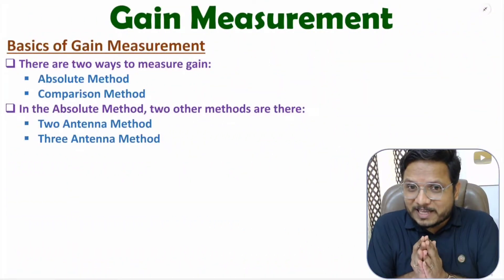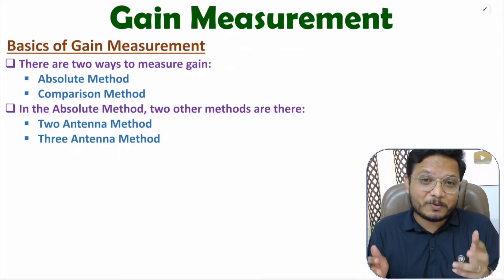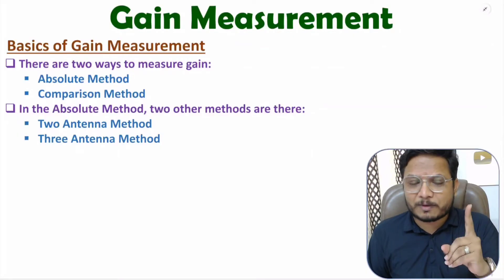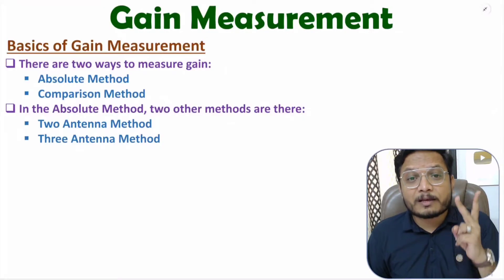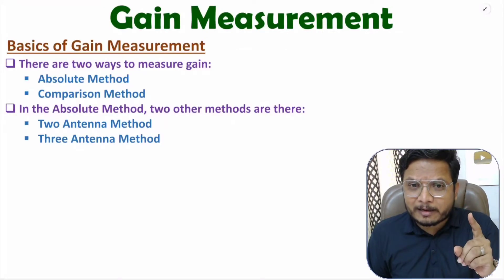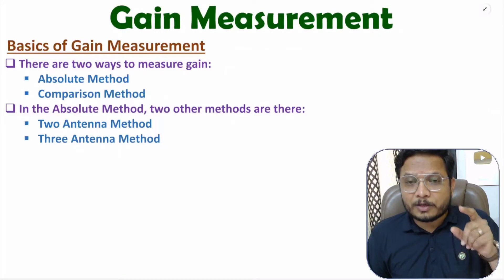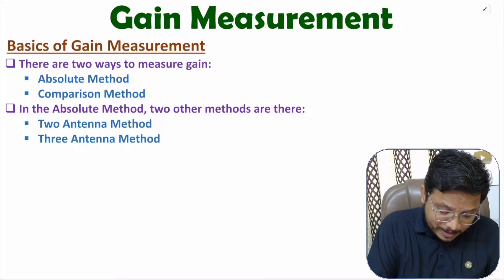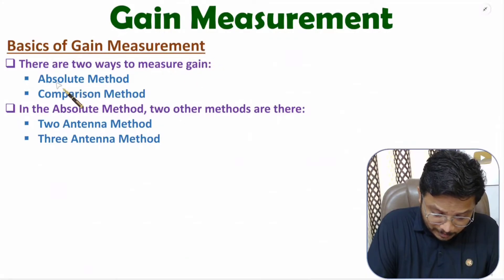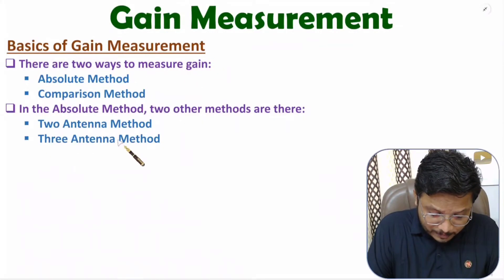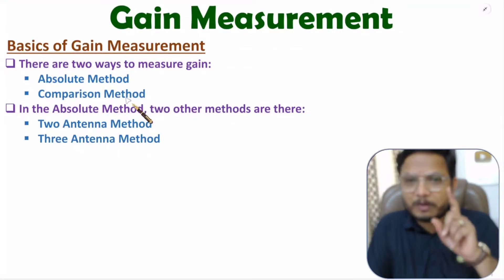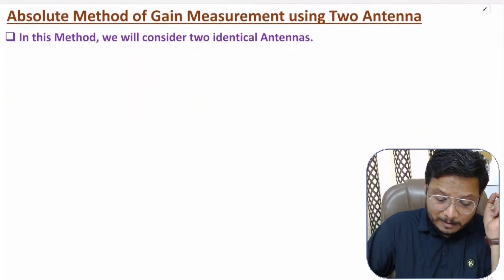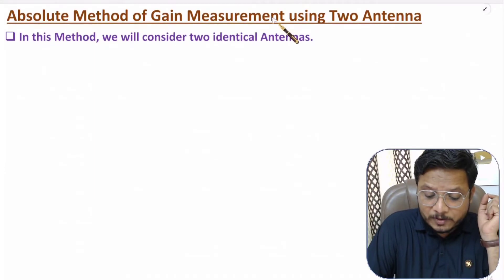Hello friends, welcome to Engineering Funda family. In this video I'll explain gain measurement of antenna. In general there are two methods of gain measurement: the first one is the absolute method and the second one is the comparison method. In the absolute method there are two categories: using two antennas and using three antennas. In total I'll explain three methods of gain measurement.